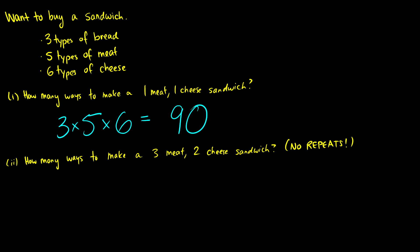Two, how many ways can we make a three meat, two cheese sandwich, and we don't want any repeats? Okay, so first we choose our type of bread, and now we want three meats. So we have five choices for our first meat, we have four choices for the second meat, and we have three choices for the third meat because we want three different meats.